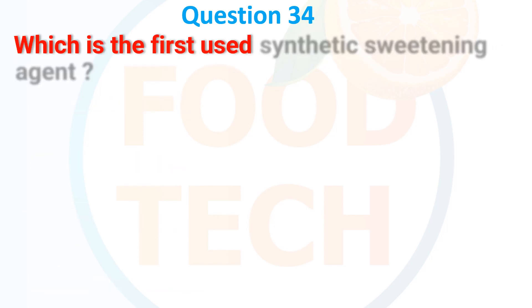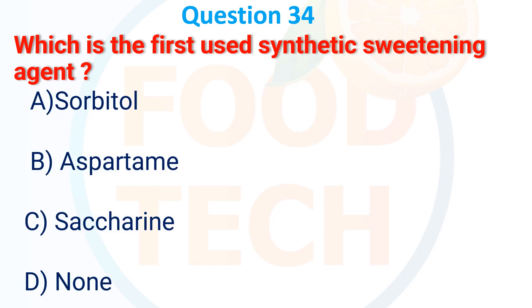Which was the first synthetic sweetening agent used? A. Sorbitol, B. Aspartame, C. Saccharin, D. None. The answer is C. Saccharin.